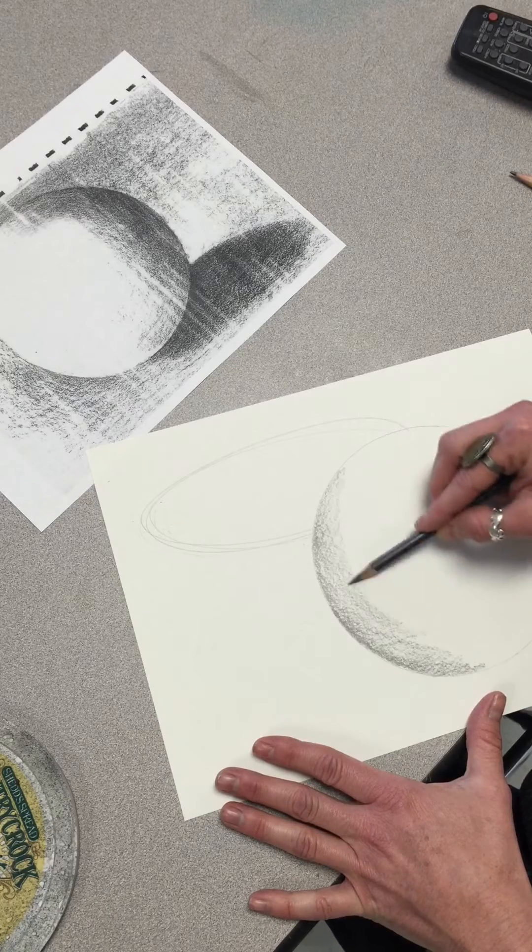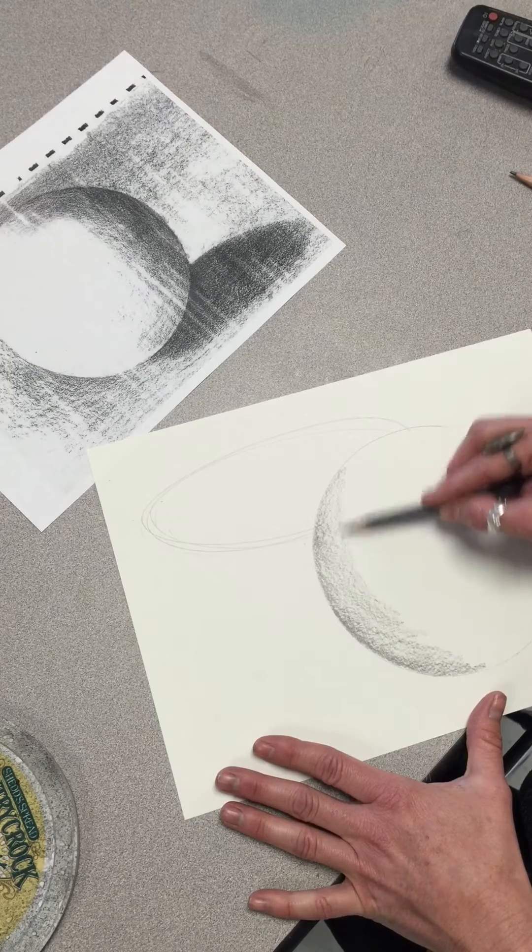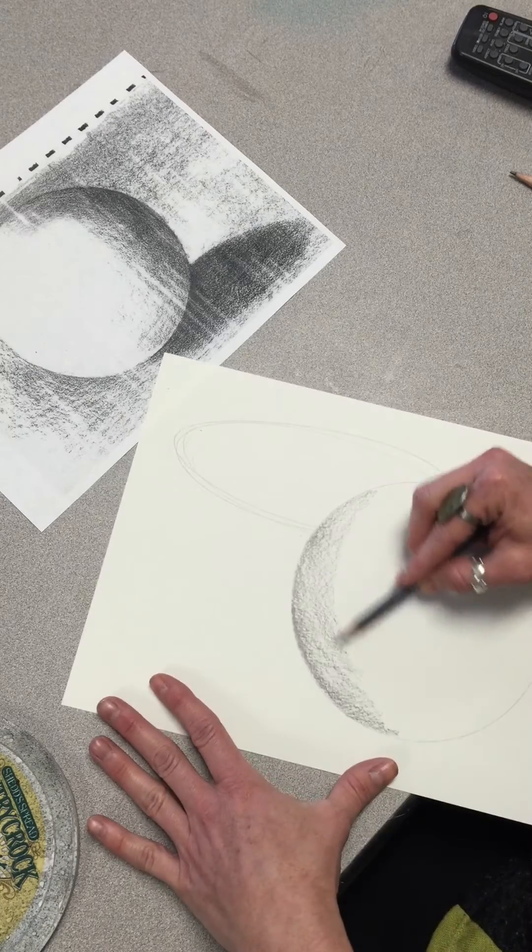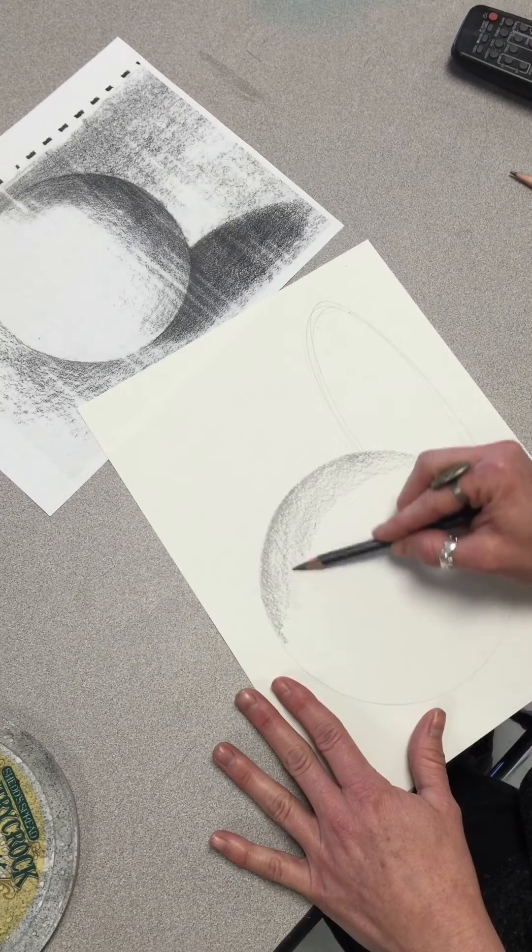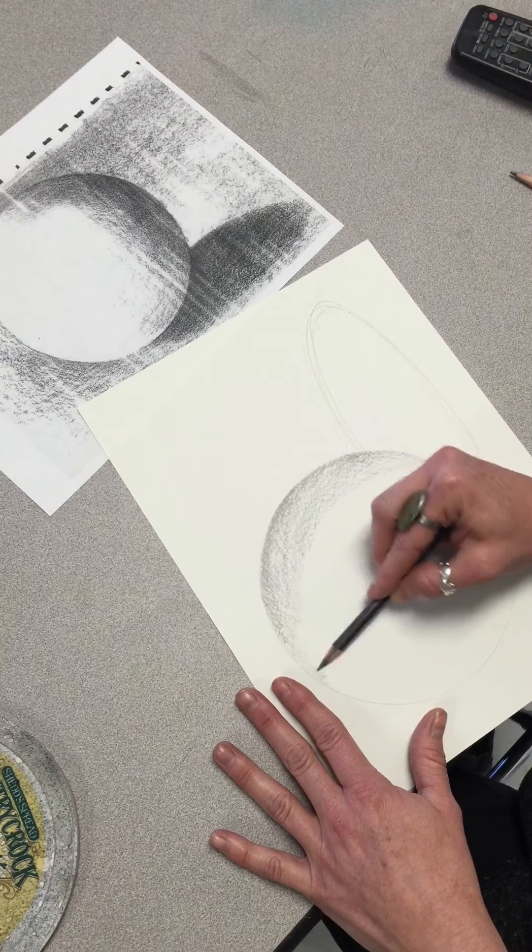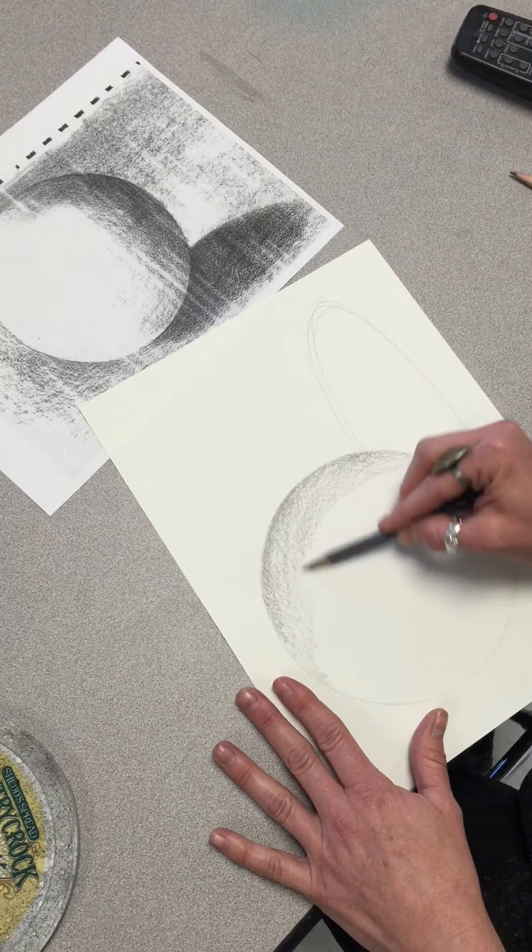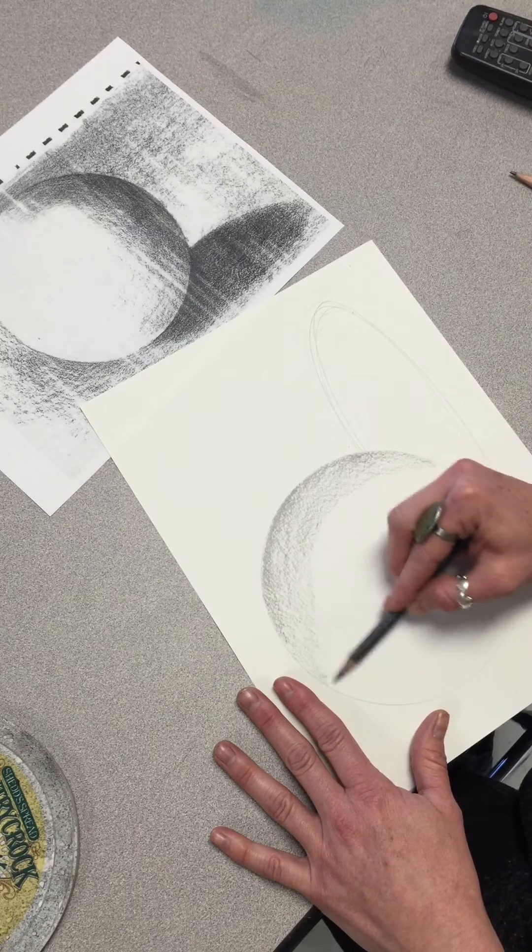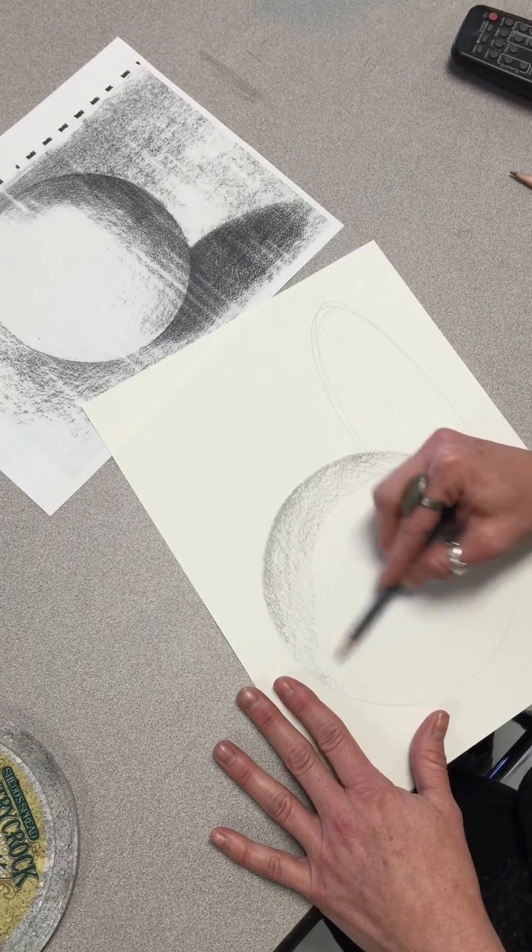You want your shading to be really soft. You don't want to see lines, and you want to gradually make the value lighter as you go in, and it's going to disappear into white.